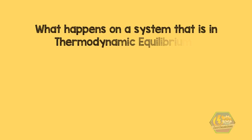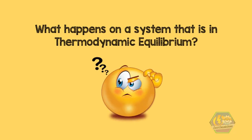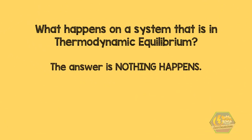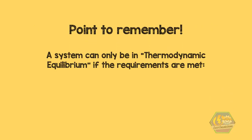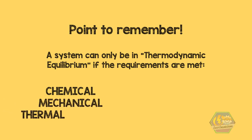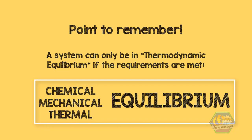So what happens in a system that is in thermodynamic equilibrium? Actually, the answer is nothing happens — since there is no movement, no change of shape, no chemical reaction, no process, no force flow, and no temperature flow. We must not forget that a system can only be in thermodynamic equilibrium if all three requirements are met: chemical, mechanical, and thermal equilibrium. That's it — this is Easy Engineering.